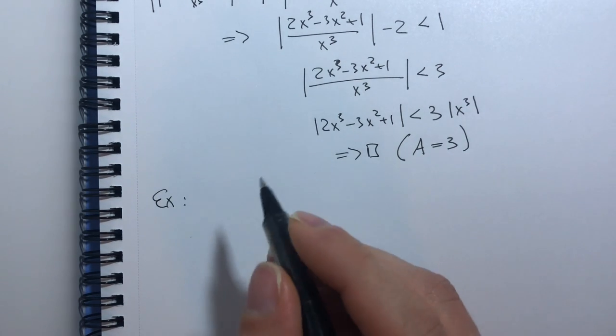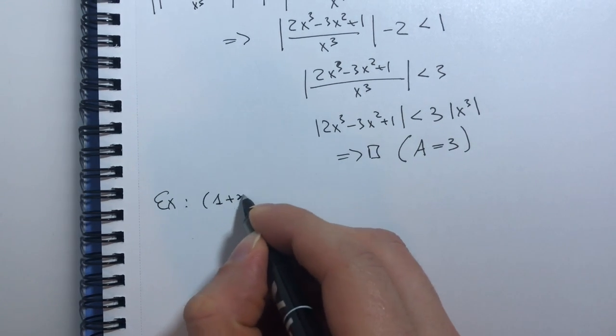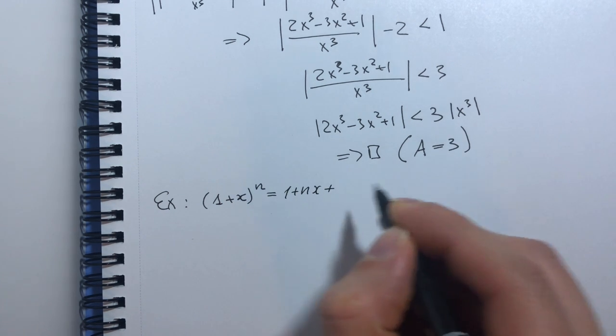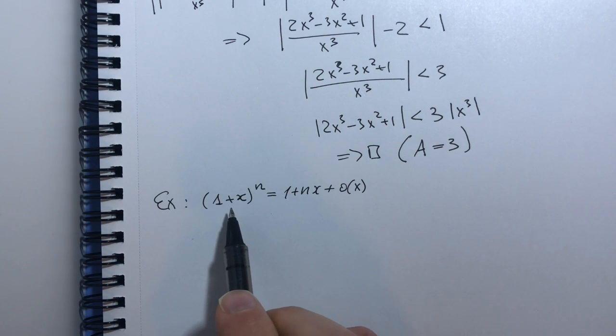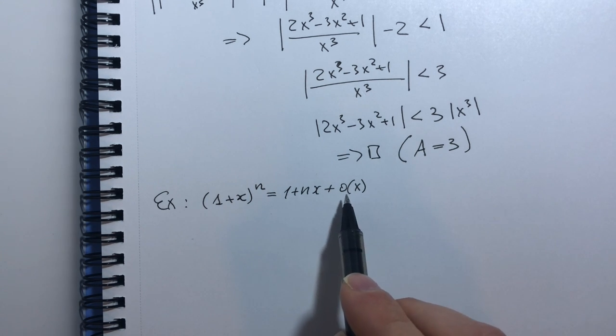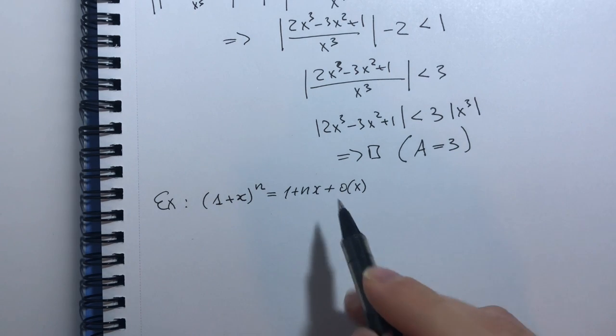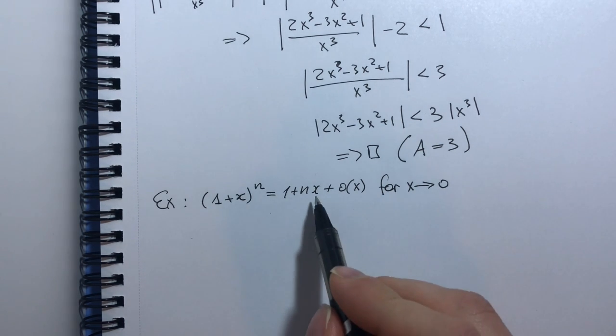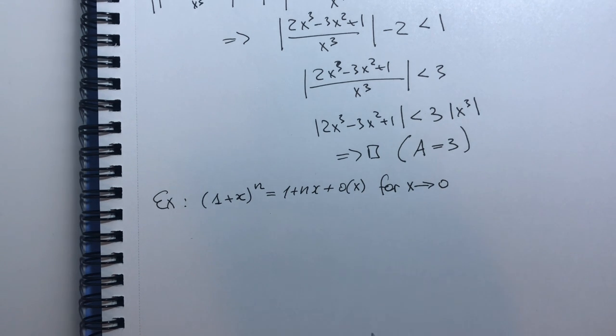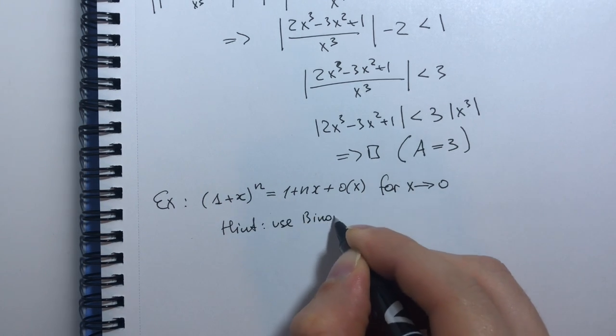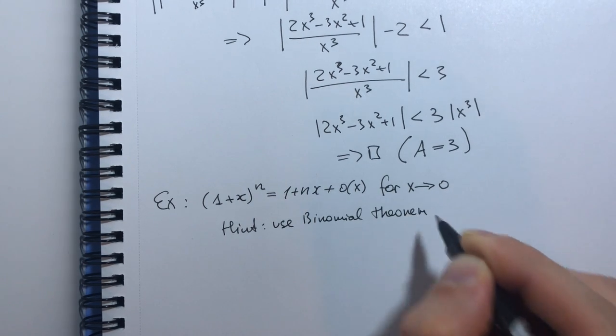Another exercise I want you to do is to demonstrate that this bracket (1 + x)ⁿ can be written down as 1 + nx + little o of x. So this bracket (1 + x) to the power n is 1 plus n times x plus some function that decays faster than x. And I want you to do it for x that tends to 0, so as x tends to 0 only these two terms become significant. And a small hint is to use binomial theorem.